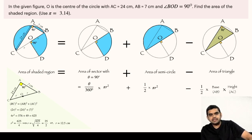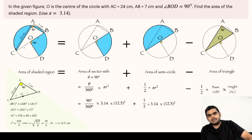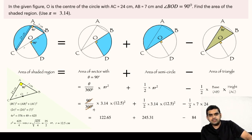After finding the value of radius, we can substitute it. The central angle is 90 degrees, so the sector area is 90/360 times 3.14 times 12.5 squared. The semicircle area is half times 3.14 times 12.5 squared. We subtract the triangle area using AB as 7 and AC as 24. Solving: the first term gives 122.65, the second term gives 245.31, and the triangle area is 84. Therefore, the area of the shaded region is 283.96 centimeters squared.